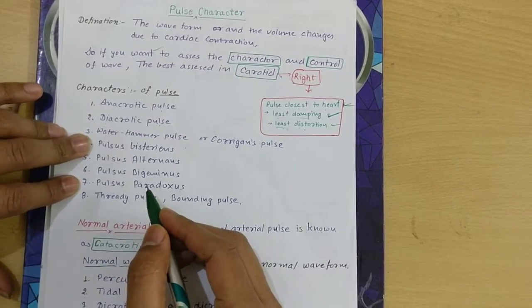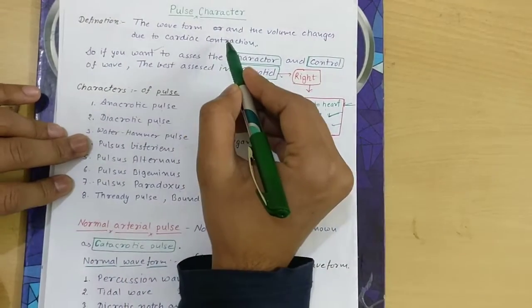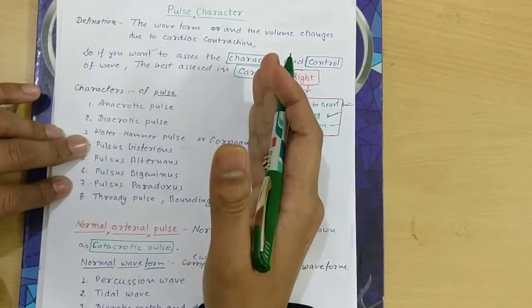We are going to discuss the pulse character. The pulse character is the waveform and volume changes due to cardiac contraction.